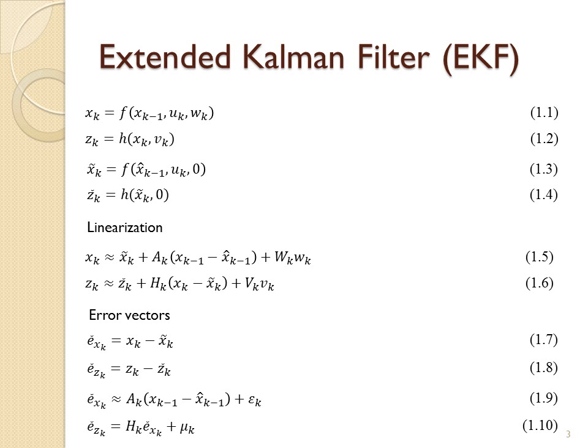X-hat K is an a posteriori estimate of the state at step K. The random variables WK and VK represent the process and measurement noise as in 1.3 and 1.4. A is the Jacobian matrix of partial derivatives of F with respect to X, W is the Jacobian matrix of partial derivatives of F with respect to W, H is the Jacobian matrix of partial derivatives of H with respect to X, V is the Jacobian matrix of partial derivatives of H with respect to V.